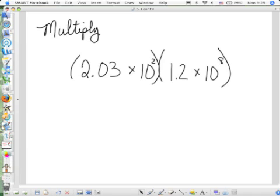What if you're asked to multiply two numbers that are in scientific notation together? The fact is here, this is four numbers being multiplied. It's 2.03 times 10 squared times 1.2 times 10 to the 8. When we're multiplying a bunch of numbers together, does the order really matter? No. Because 1 times 2 times 3 is the same as 2 times 3 times 1. No matter what order you multiply them in, you're going to get the same answer.